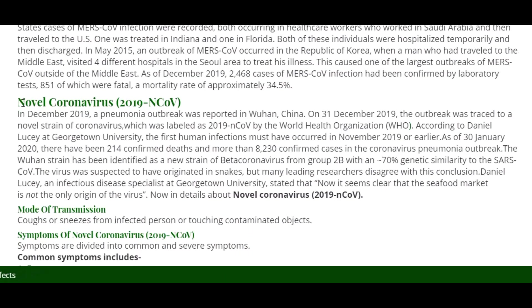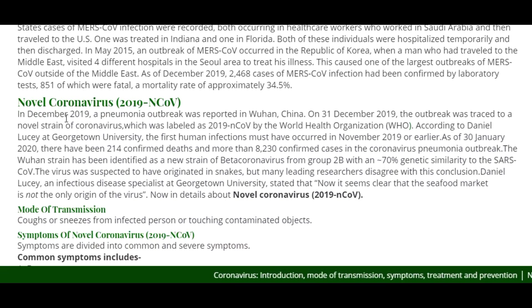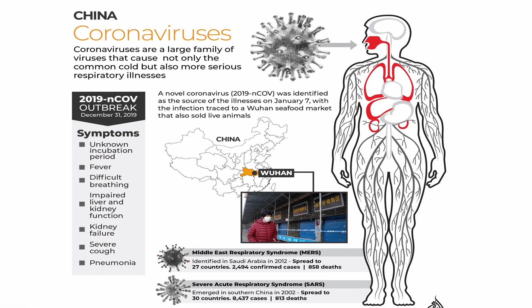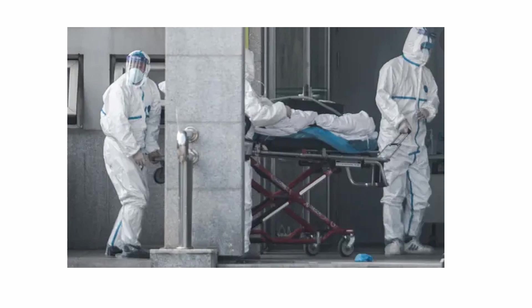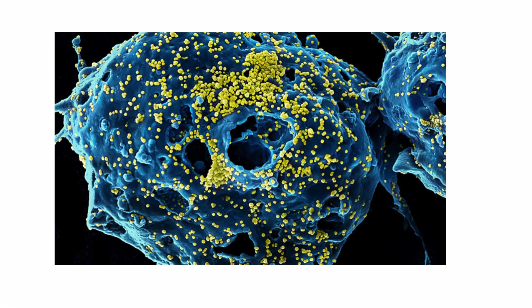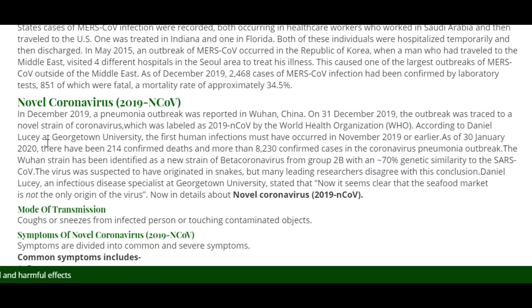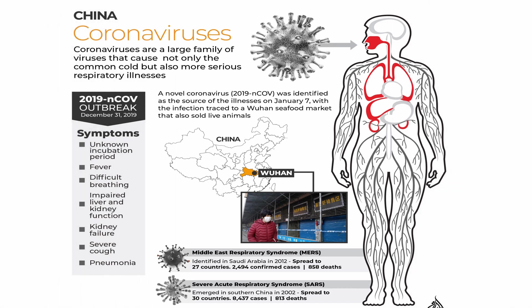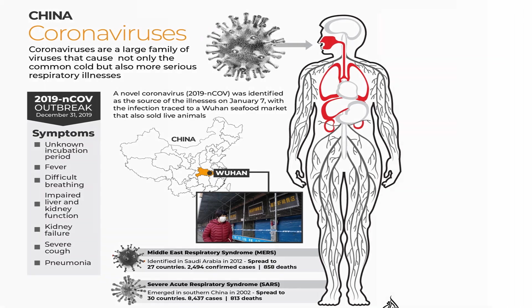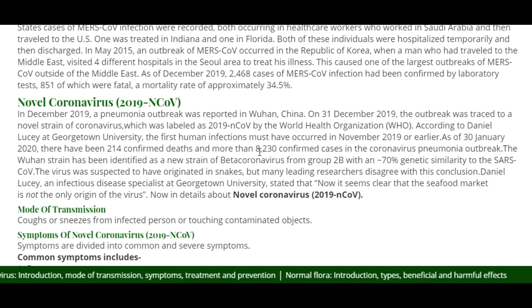About Novel Coronavirus 2019-nCoV, also called Wuhan Coronavirus: in December 2019, a pneumonia outbreak was reported in Wuhan, China. On 31 December 2019, the outbreak was traced to a novel strain of coronavirus labeled 2019-nCoV by the WHO. According to Daniel Lucey at Georgetown University, the first human infection must have occurred in November 2019 or earlier. As of 30 January 2020, there had been 21,214 confirmed deaths and more than 8,230 confirmed cases in the coronavirus pneumonia outbreak.